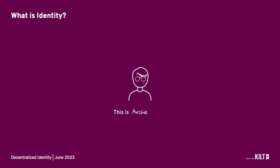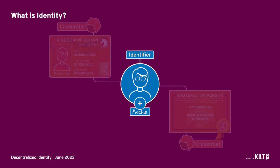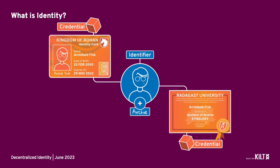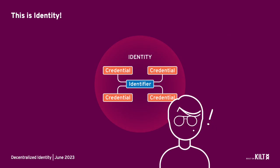Identity consists of a unique identifier plus credentials. To see how that works, meet Archie. In the physical world, Archie's identifier — his face, fingerprints or signature — belongs to him. It's not given to him by the government or any external organization. Archie builds his identity by adding credentials from trusted entities, like his government ID card, university degree, bank or membership cards, and all the things that make Archie Archie. These are under his control and he can decide with whom, where and when he shares them.